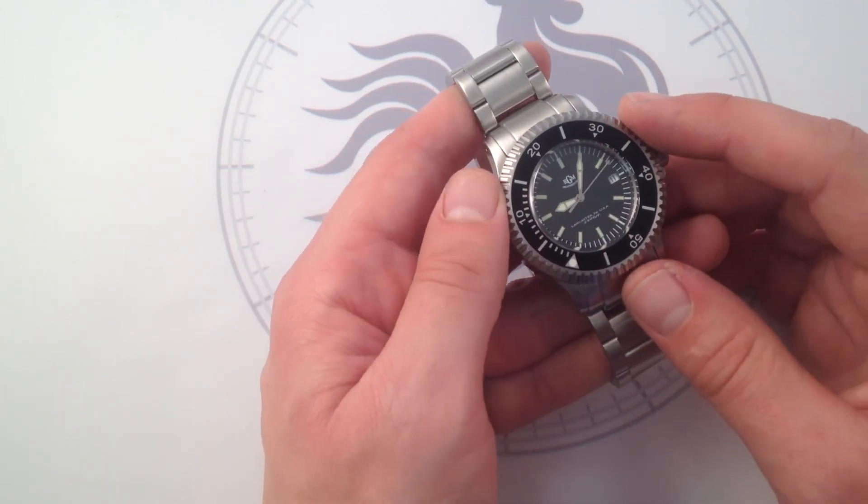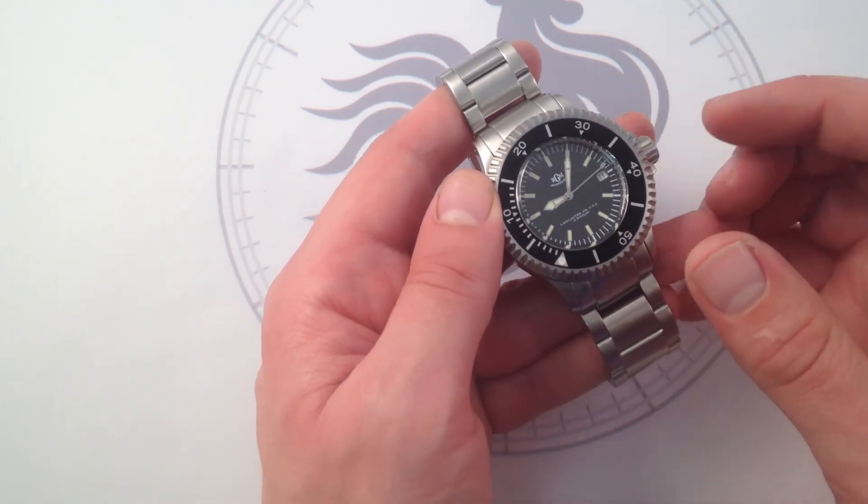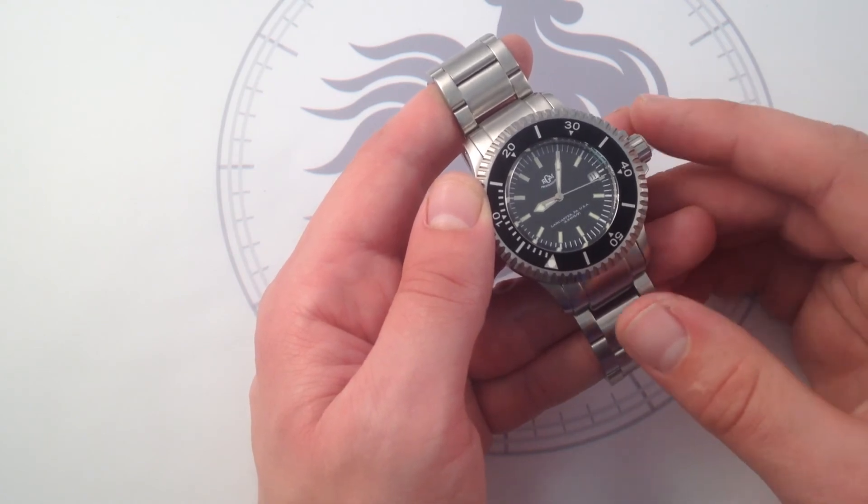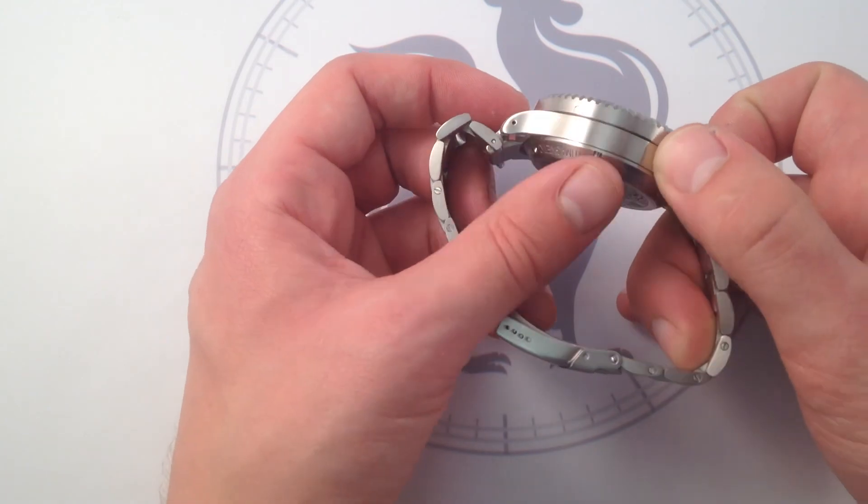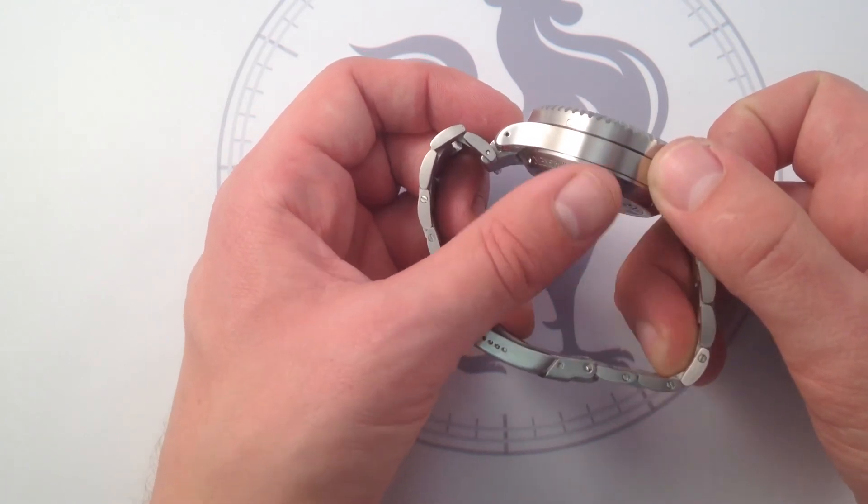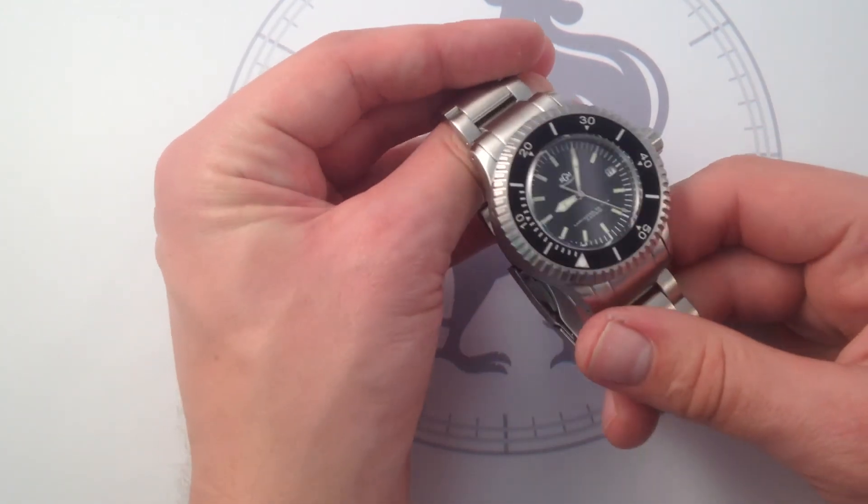Moreover, because the movement is exceptionally rugged, it's well-suited to a sports watch such as this one. And it also features another thoughtful addition by RGM, which is a full soft iron anti-magnetic Faraday cage encompassing the movement,